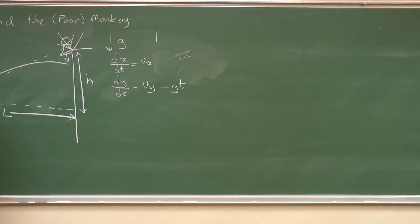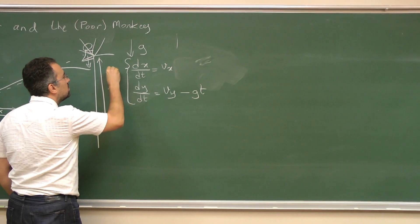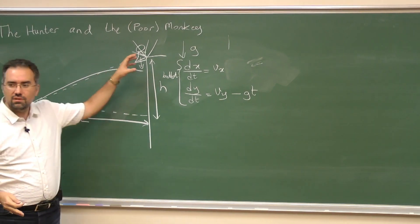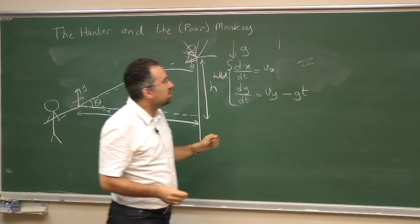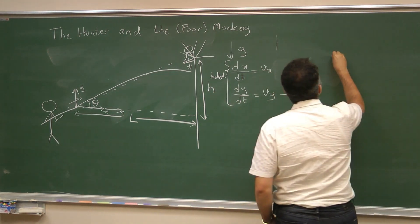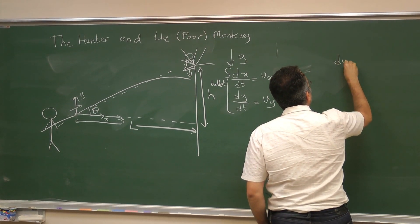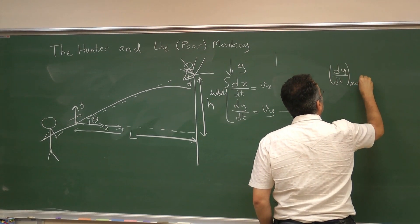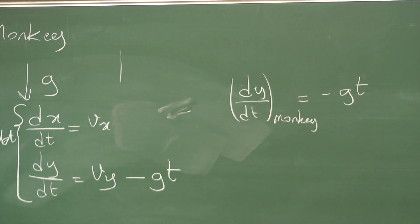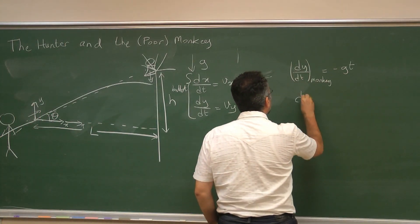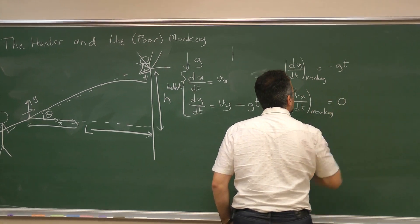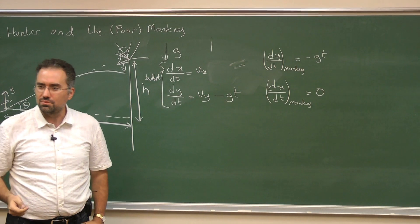So now of course this is the equation for the bullet. Now how does the monkey move? Initially the monkey is at rest and then it lets go of the branch. And then it doesn't move at all in the x direction. So the dy/dt of the monkey is just going to be what? And it's not going to move in the x direction at all.